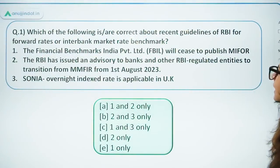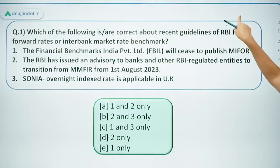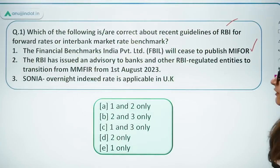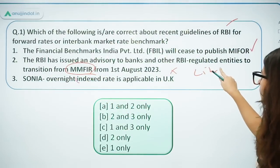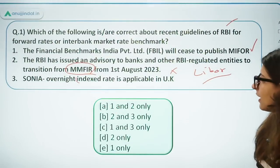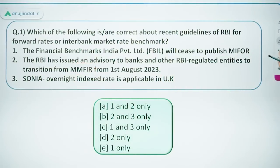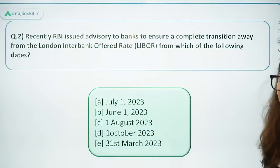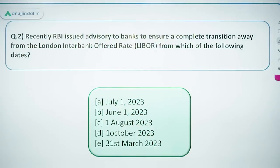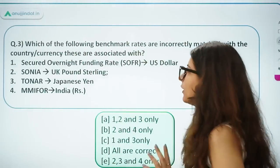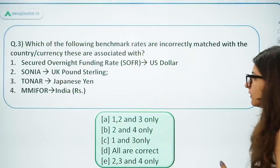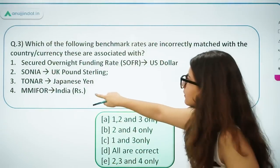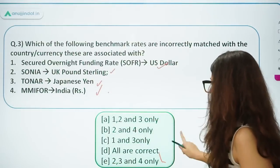Now let's look at practice questions. Which of the following is correct about recent RBI guidelines for forward rates or interbank market rate benchmarks? FBIL will cease to publish MIFOR — this is correct. RBI issued an advisory to transition from MMFIOR — this is incorrect, it should be LIBOR. SONIA is an overnight index rate applicable in UK for sterling — this is correct. All of the above options regarding benchmark rates matched with their country and currency are correct.